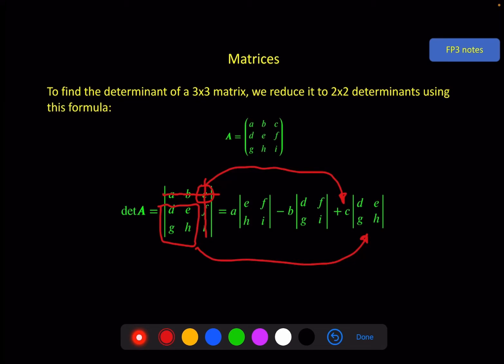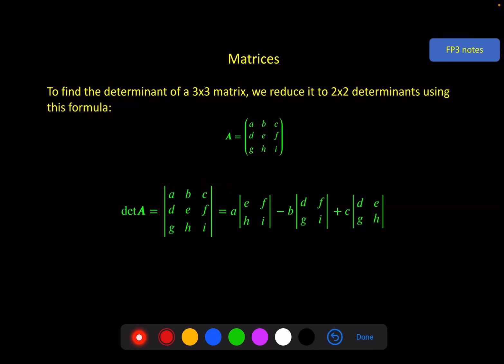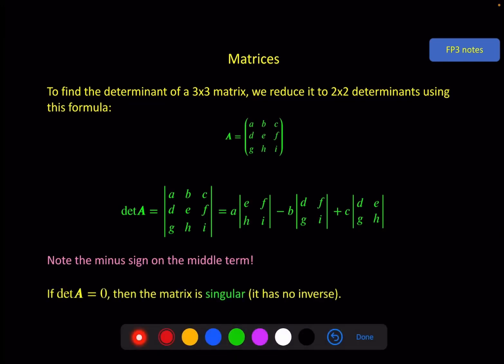It's very important to remember that minus sign in the middle — that's very easy to forget. Just as with 2x2 matrices, a 3x3 matrix is singular if it has no inverse, and that happens when the determinant is equal to 0. For the same reason, the inverse process involves 1 divided by the determinant, and if it's 0 you can't divide by that.